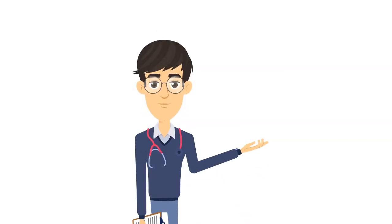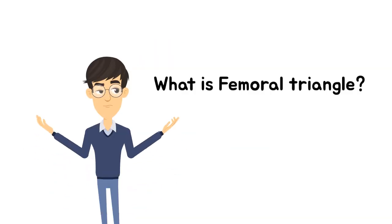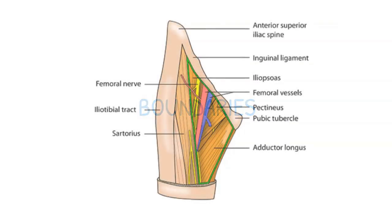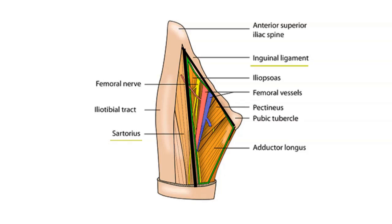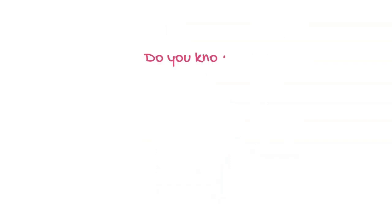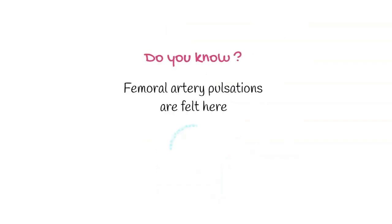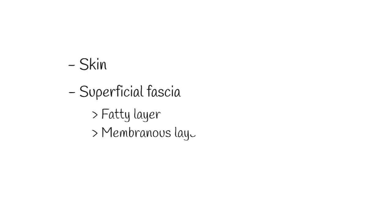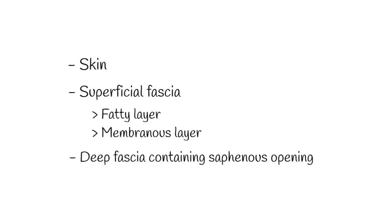What is the femoral triangle? It is bounded laterally by the medial border of sartorius, superiorly by the inguinal ligament, and medially by the medial border of adductor longus. Femoral artery pulsations are felt here. From top, it is covered by skin, superficial fascia with fatty and membranous layers, and deep fascia with the saphenous opening.